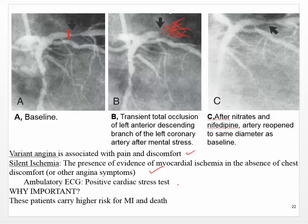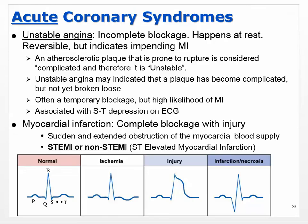A cardiac stress test can reveal silent ischemia. It's important because stable, variant, and silent ischemia can all put patients at higher risk for myocardial infarction and death. Those were the chronic types. Now let's talk about acute coronary syndromes, where we start thinking about heart attacks — fast onset that develops very quickly.